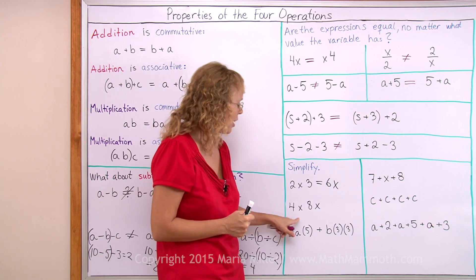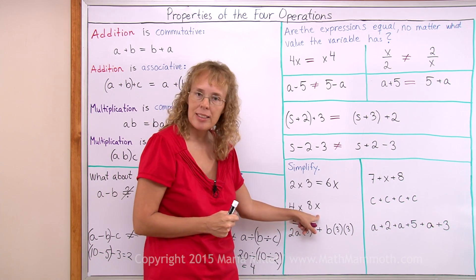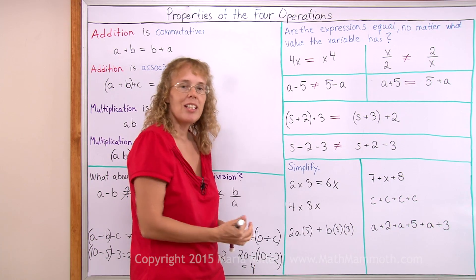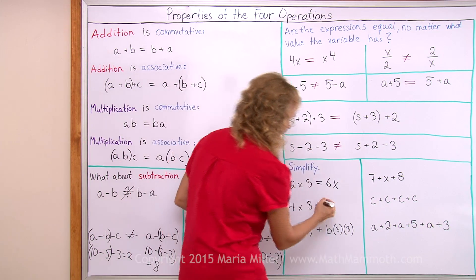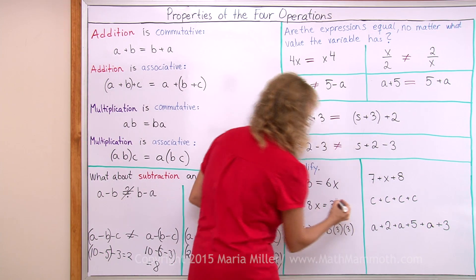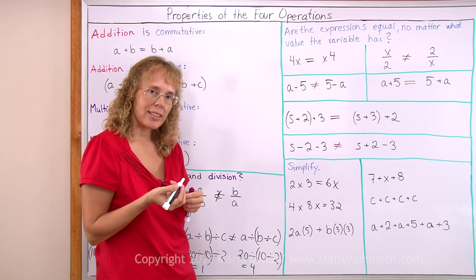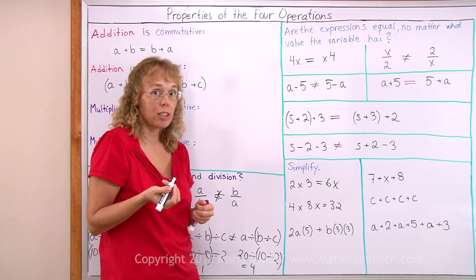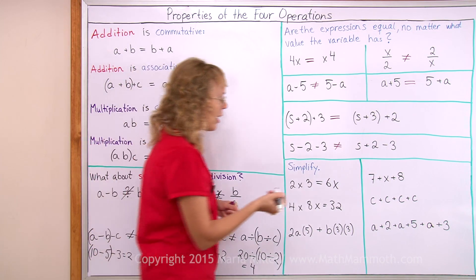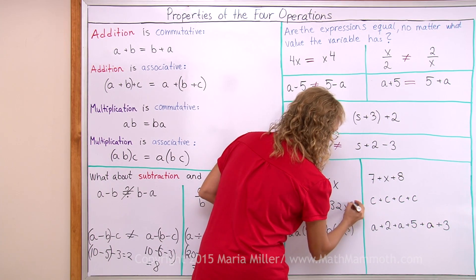Over here, 4 times x times 8 times x. Now 4 times 8, I can multiply them first. Now that's 32. Then I can also multiply x times x and write it with the shortened notation x squared. That is simpler looking. That is how it's usually written.